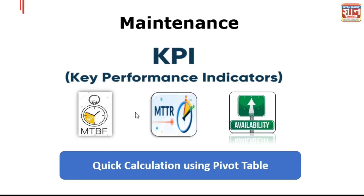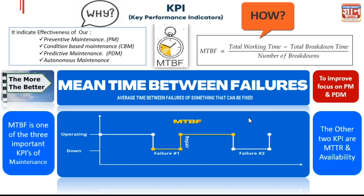Basically, the three KPIs we generally calculate in industry are MTBF, MTTR, and reliability. Let us understand what MTBF is. MTBF is basically mean time between two failures. This is one failure, this is the second failure — the machine starts from here, stops here, then we start again, and then it stops again. Between these two failures, the average time is what MTBF is.